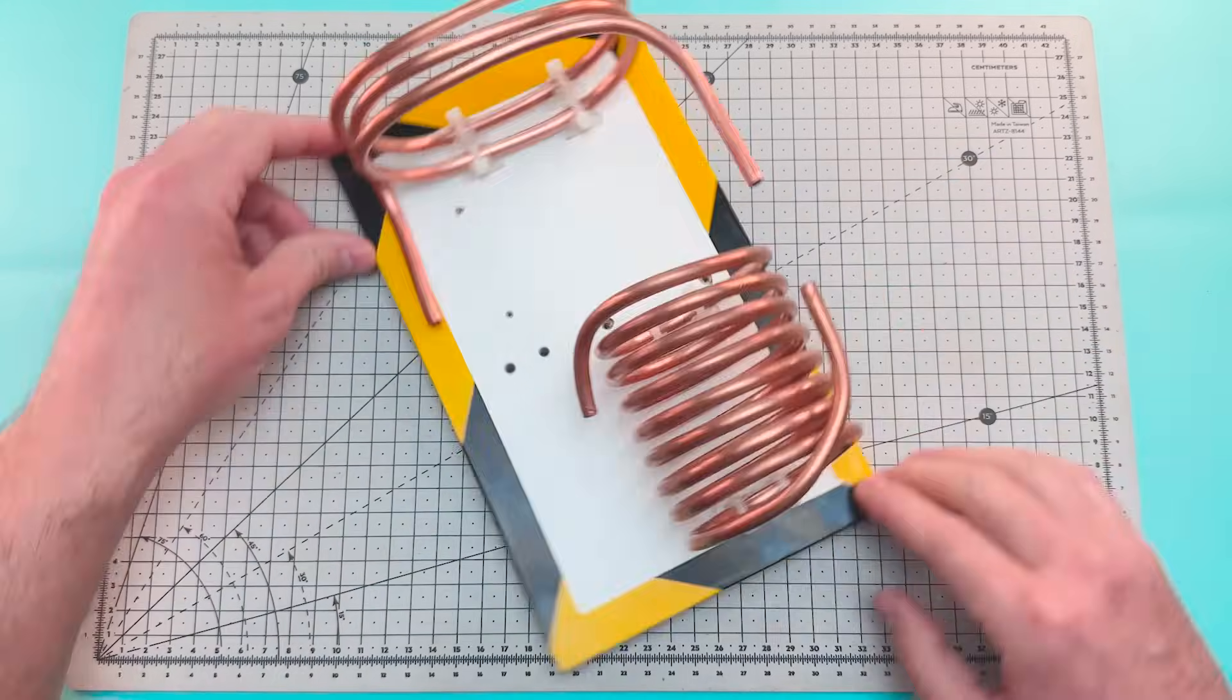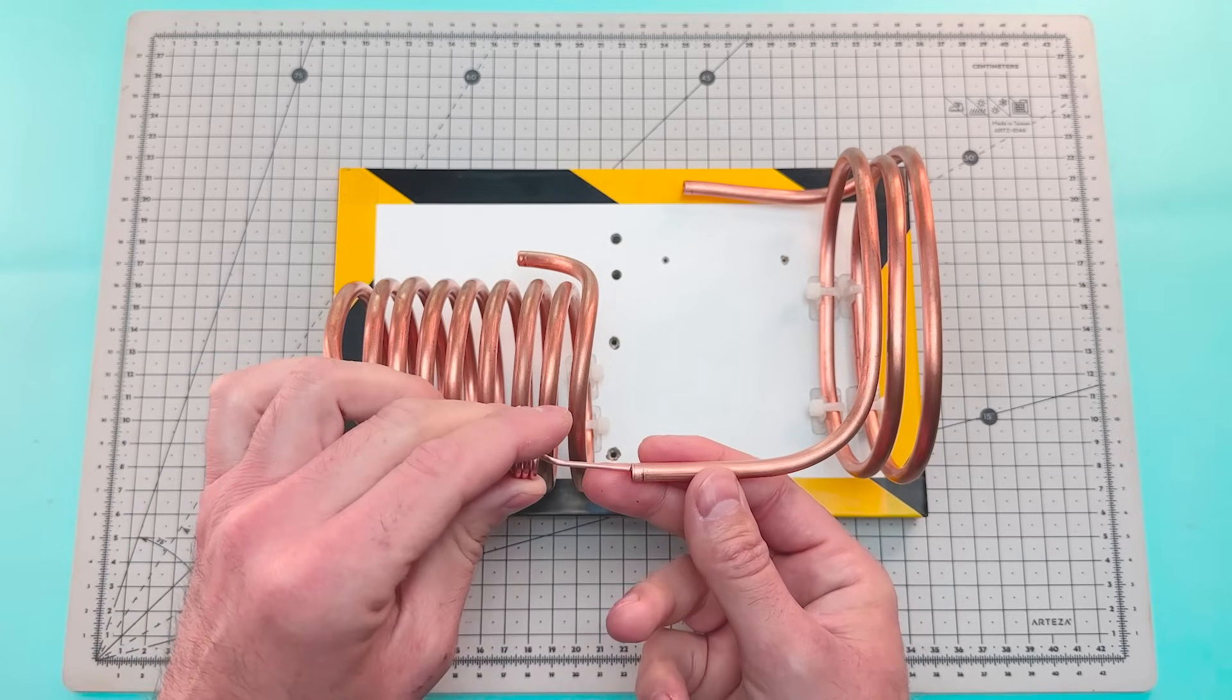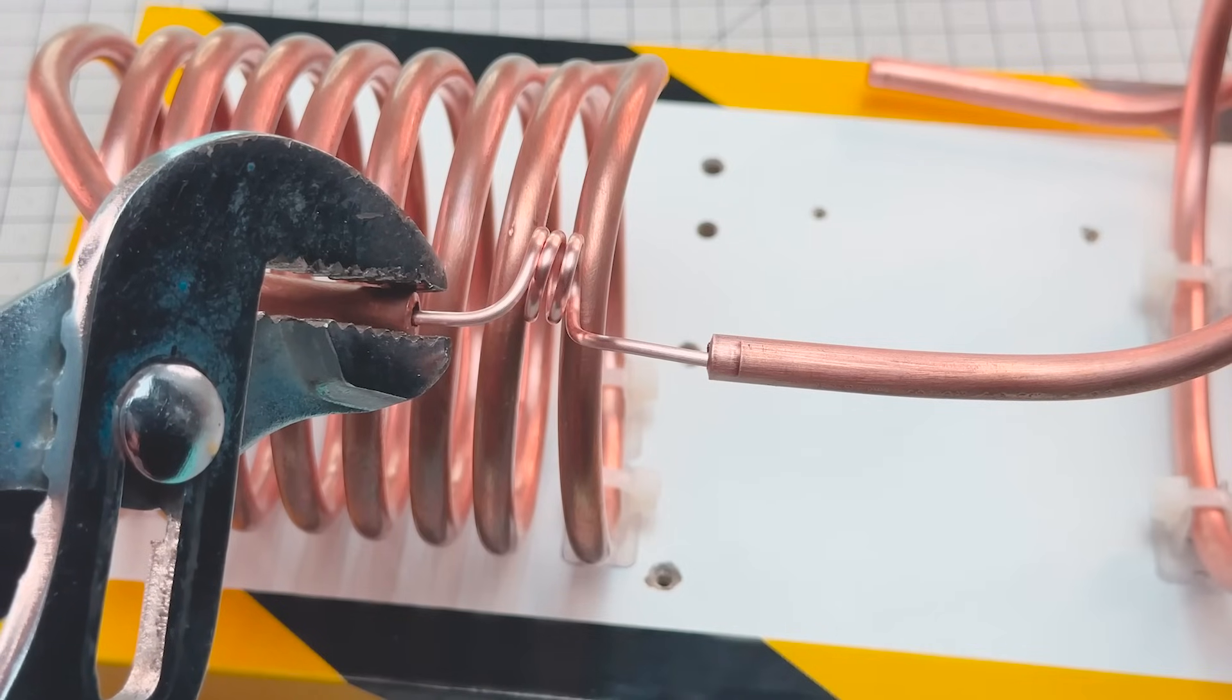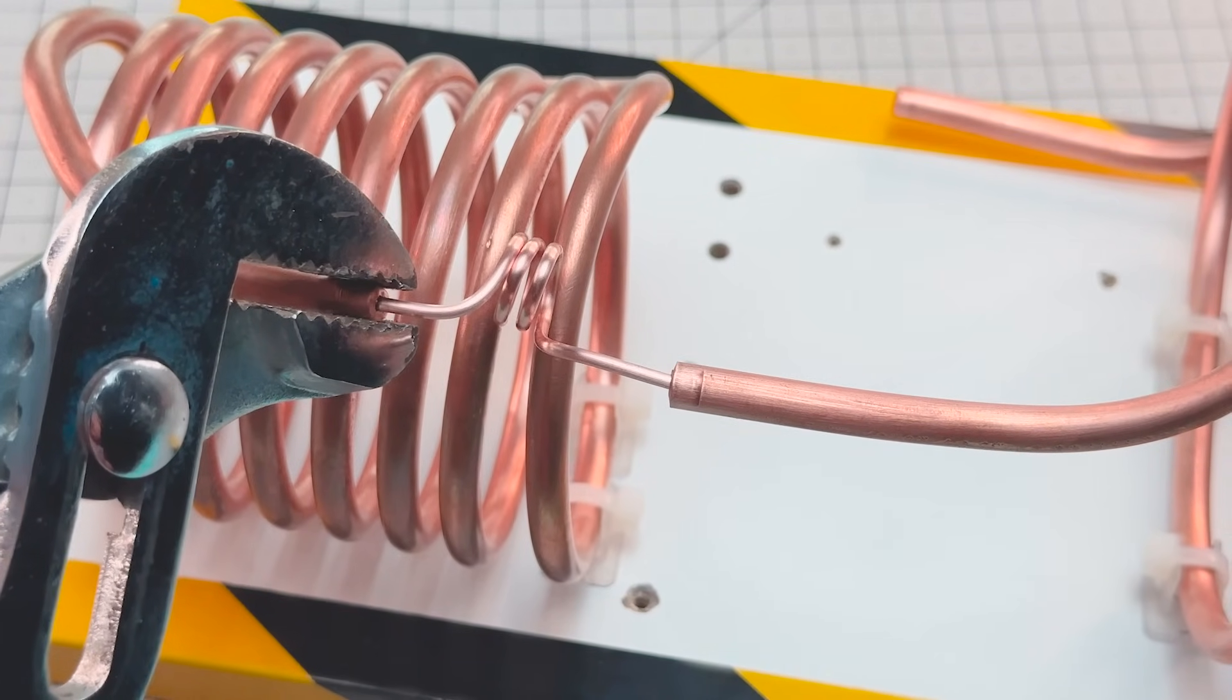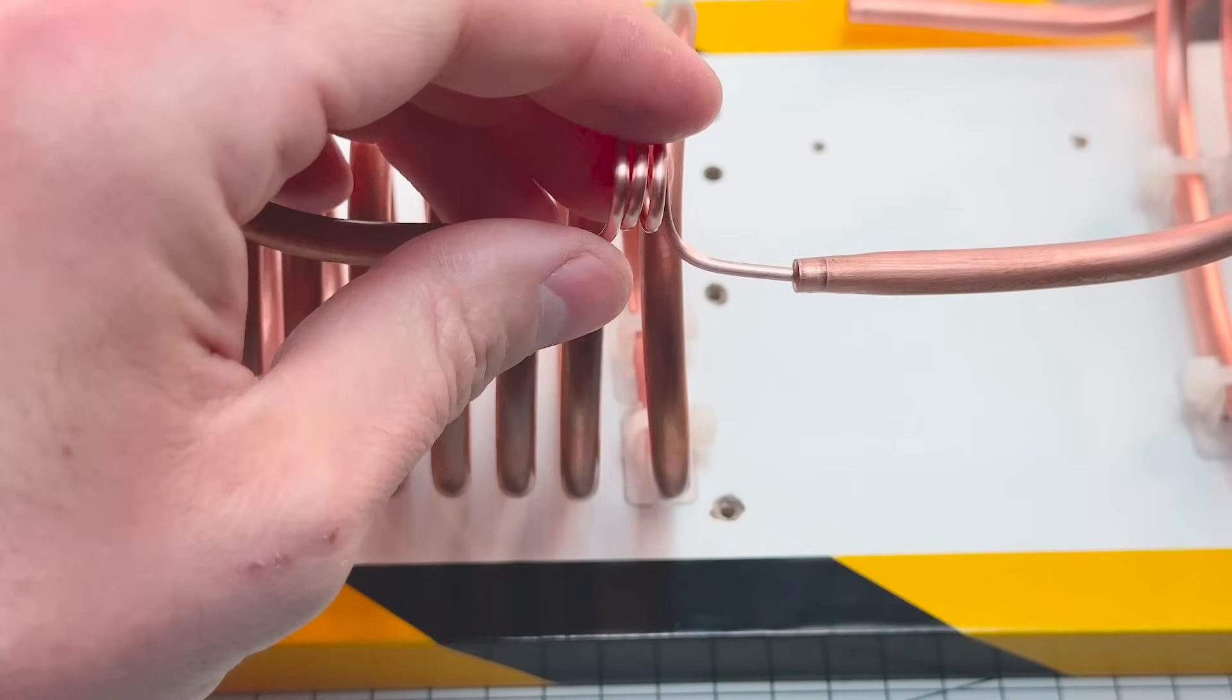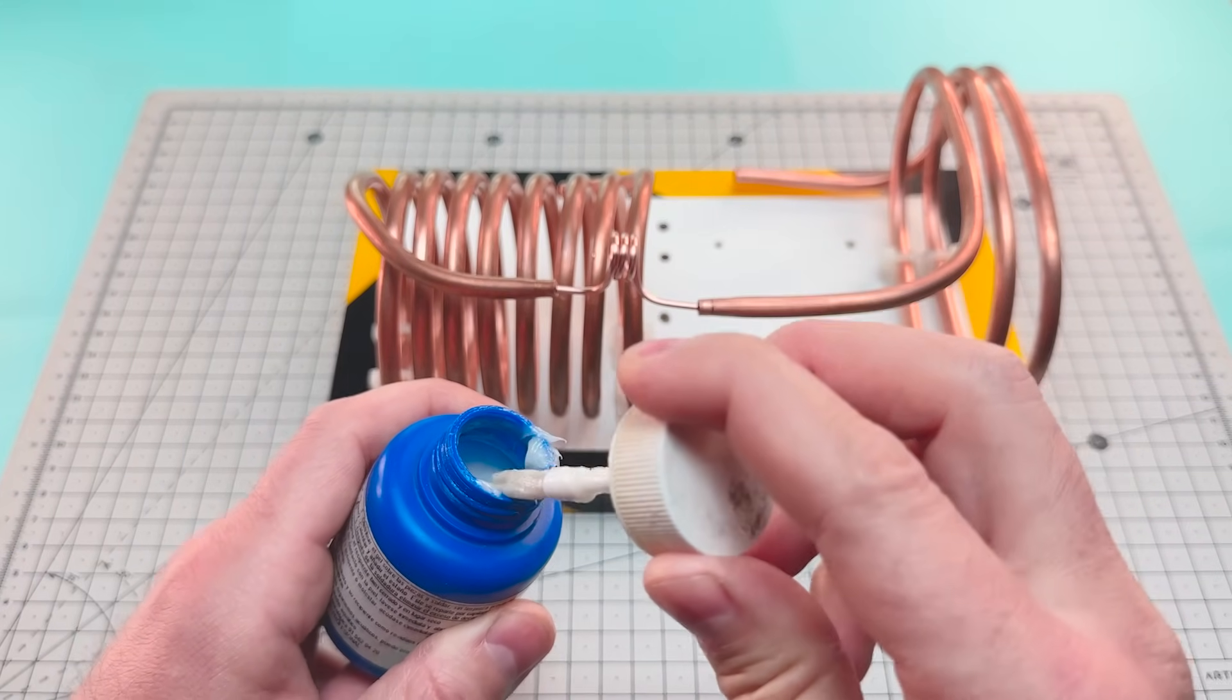We're going to insert the capillary tube into the end of the condenser and the other side into the evaporator. Flatten the two sides to fix the capillary. To avoid gas leaks, we solder the ends with tin using a soldering iron.